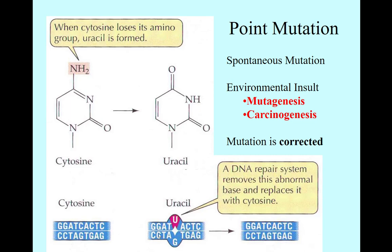So the DNA repair enzyme can easily see this, repair it, and replace that U with the C, and the mutation is gone. That's a case of the DNA repair enzyme seeing a fairly simple mistake and fixing the mutation before it causes any damage.